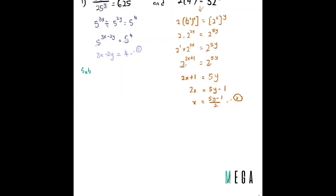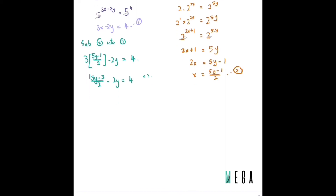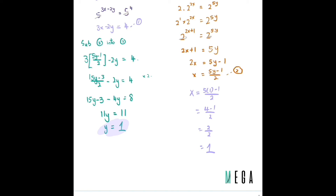Substituting equation 2 into equation 1: 3·((5y − 1)/2) − 2y = 4, giving (15y − 3)/2 − 2y = 4. Multiplying through by 2: 15y − 3 − 4y = 8, so 11y = 11 and y = 1. Then x = (5·1 − 1)/2 = 4/2 = 2. So x = 2 and y = 1. That's the final answer.